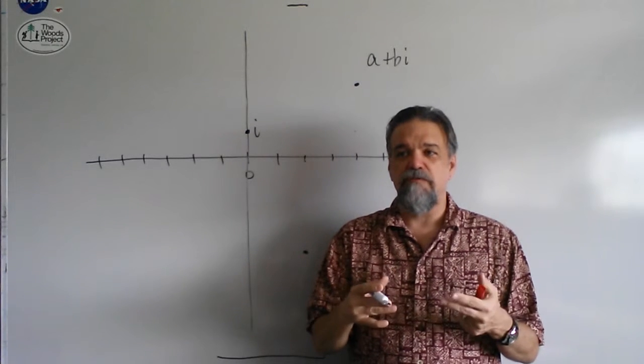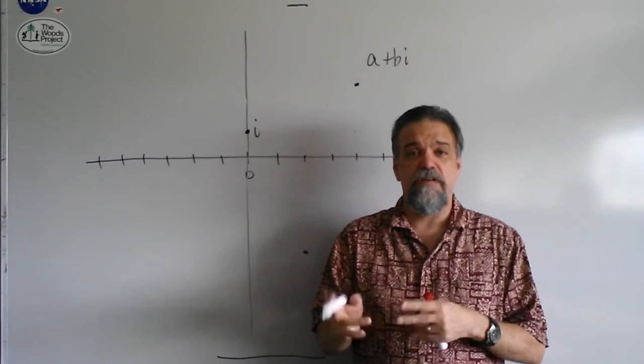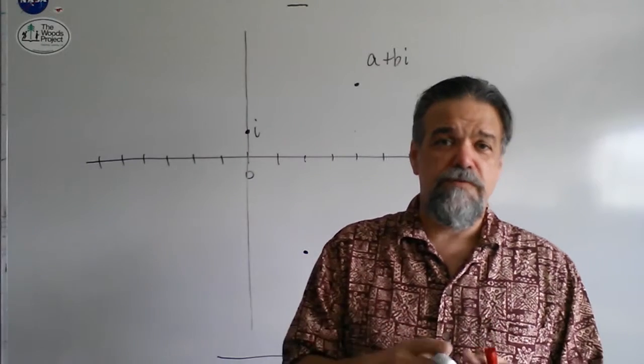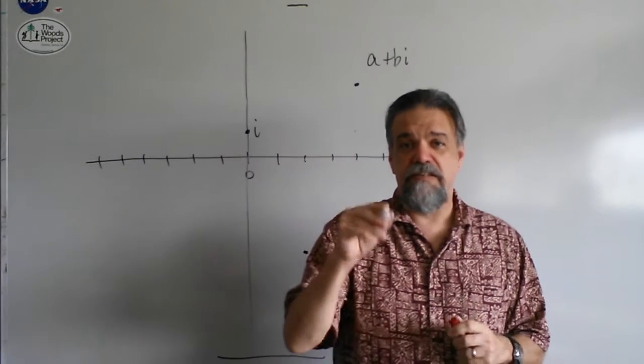Usually, we think of absolute value as, if it's positive, you leave it alone. If it's negative, you make it positive. But that's not actually what absolute value means. What absolute value means is, it's the distance from zero.